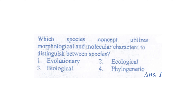Next: which species concept utilizes morphological and molecular characters to distinguish between species – evolutionary, ecological, biological, or phylogenetic? The right answer is phylogenetic. The phylogenetic species concept utilizes morphological and molecular characteristics to distinguish between species.